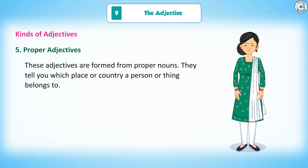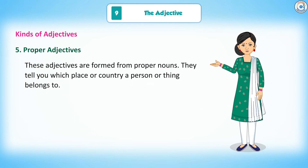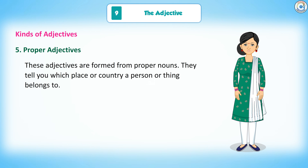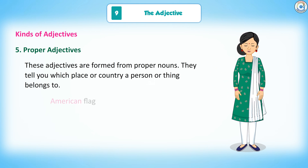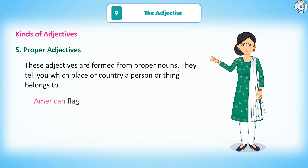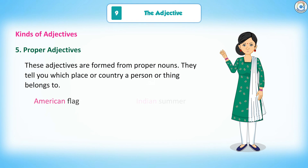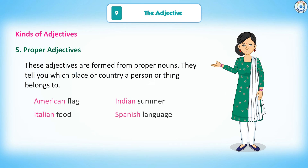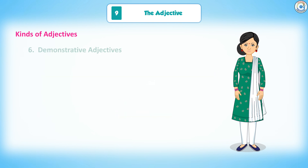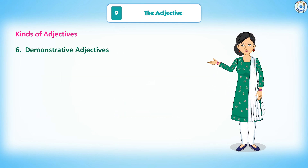5. Proper adjectives: These adjectives are formed from proper nouns. They tell you which place or country a person or thing belongs to. Examples: American flag, Indian summer, Italian food, Spanish language.